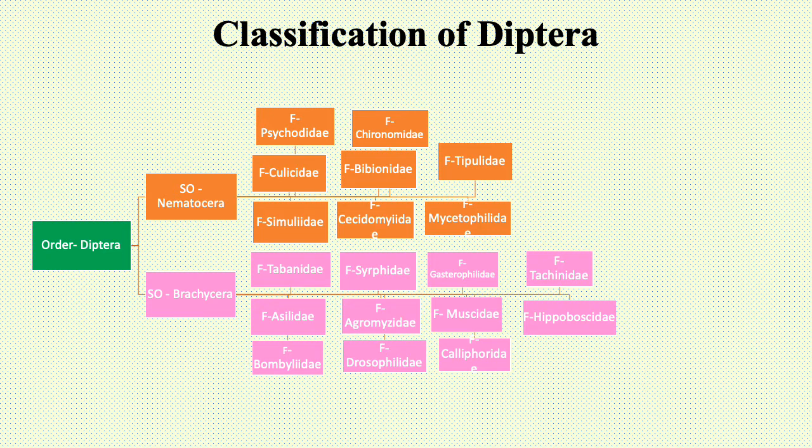Common examples of these families: family Psychodidae includes moth flies or sand flies; family Culicidae includes mosquitoes; family Simulidae includes black flies, buffalo gnats, and turkey gnats; family Chironomidae includes non-biting midges, whose larvae are known as blood worms.